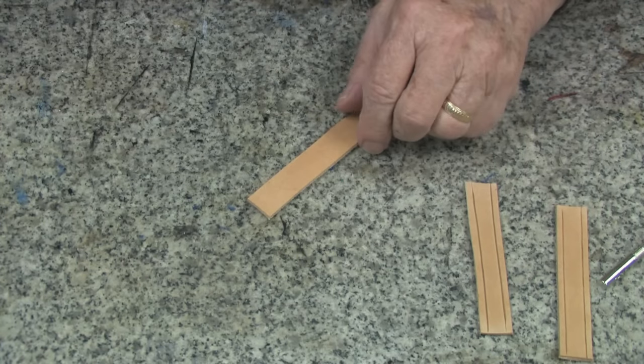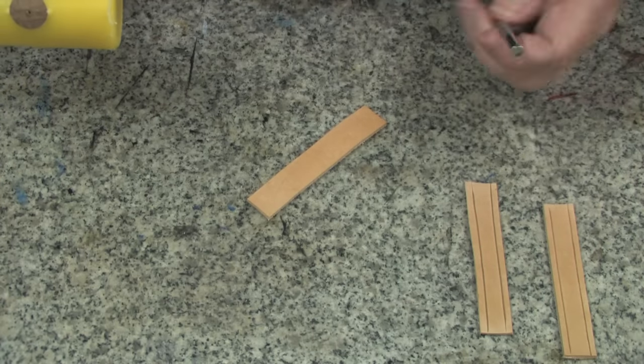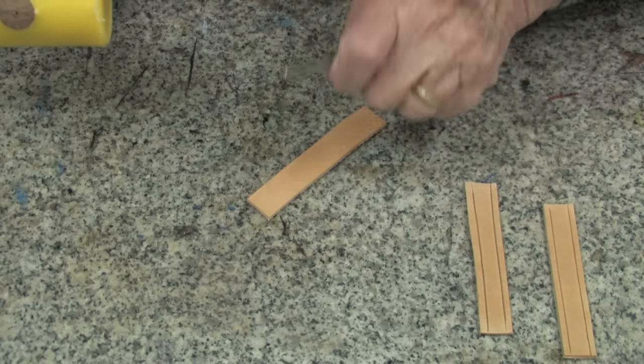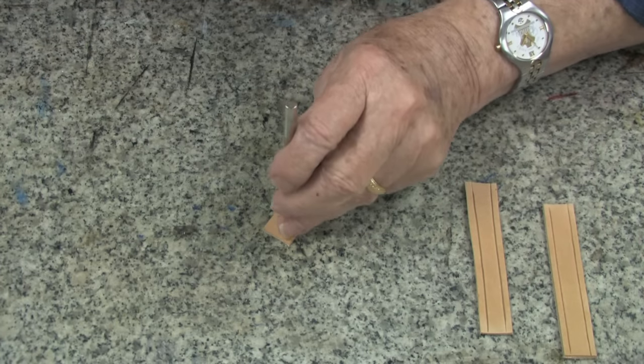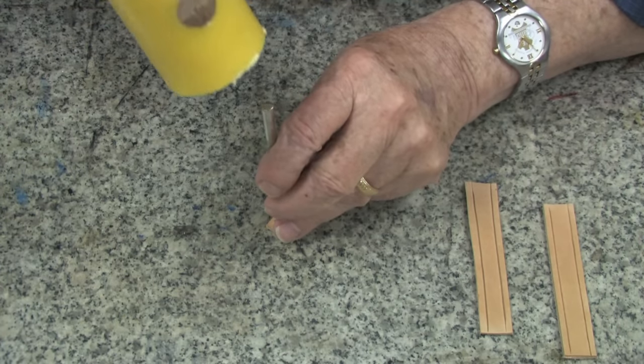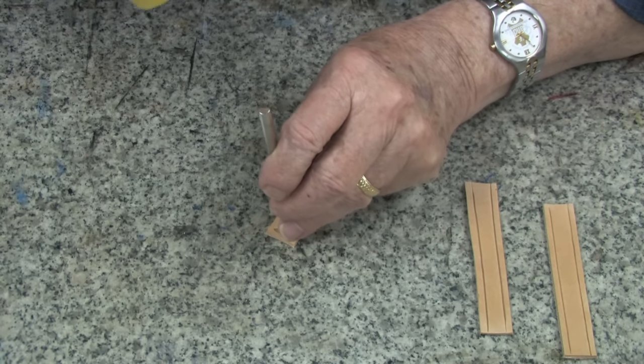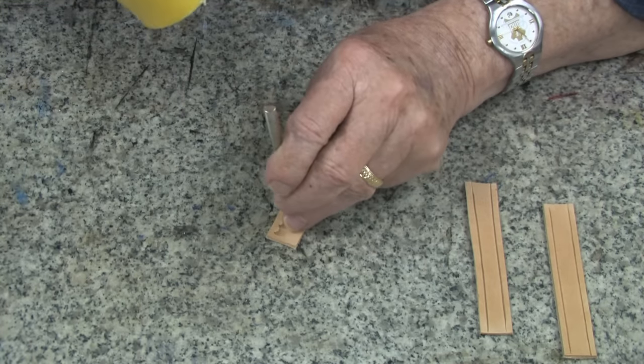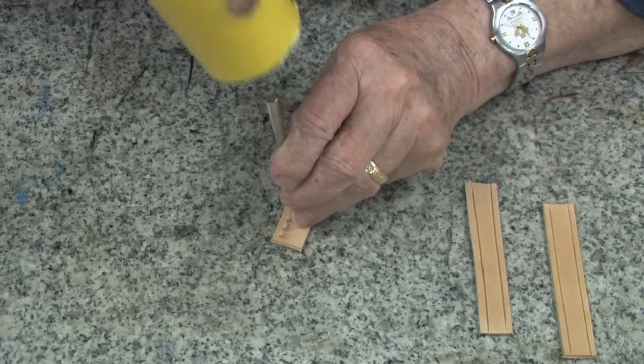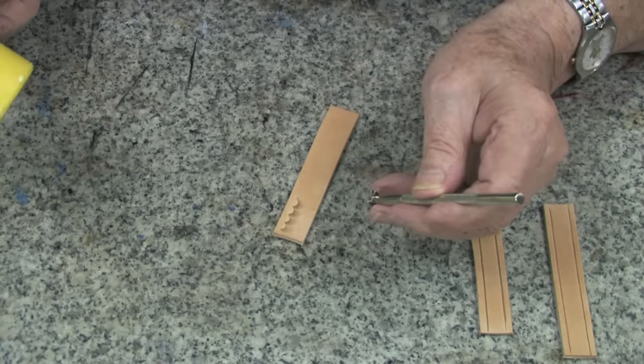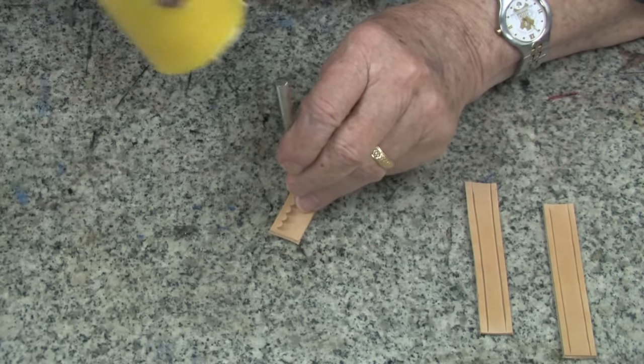Or you can stamp a border using the border stamp of your choice. In this case, I'm just going to use a 431 camouflage tool, and I will stamp down both edges, about one-eighth inch from the edge.